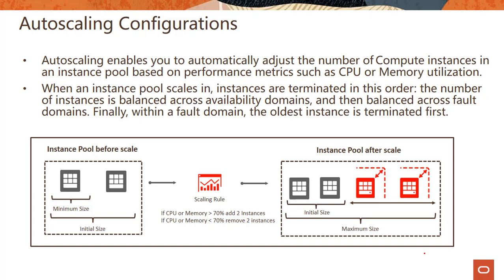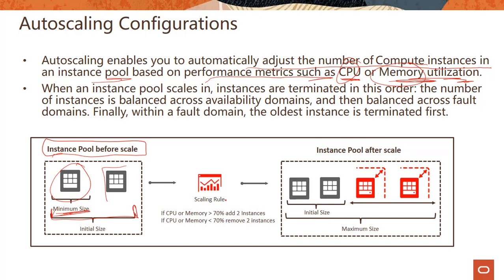Auto scaling enables you to automatically adjust the number of compute instances in a pool based on performance metrics such as CPU or memory thresholds. Today the only policy supported is threshold-based, and only CPU and memory are supported — more will come in the future. Looking at this graphic: before scaling, you define a minimum size and an initial size, and then define scaling rules — for example, CPU greater than 70% adds two instances, CPU or memory less than 70% removes two instances.